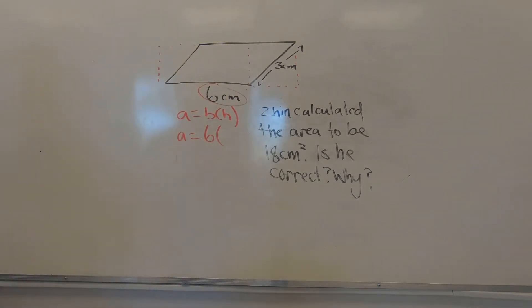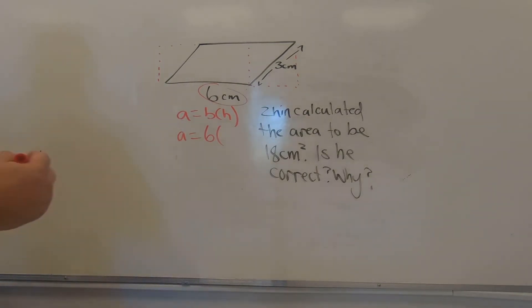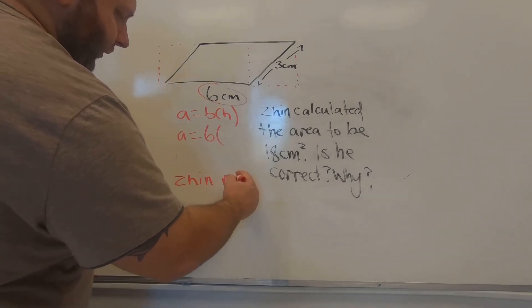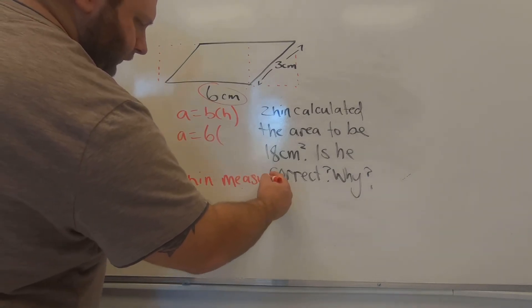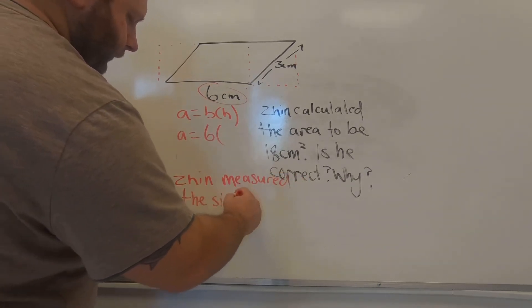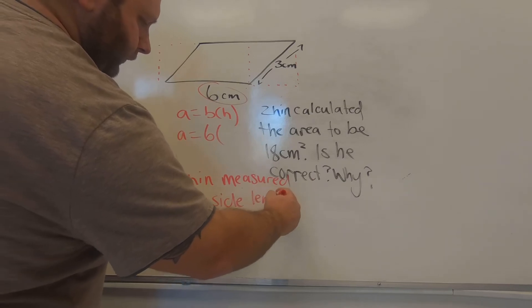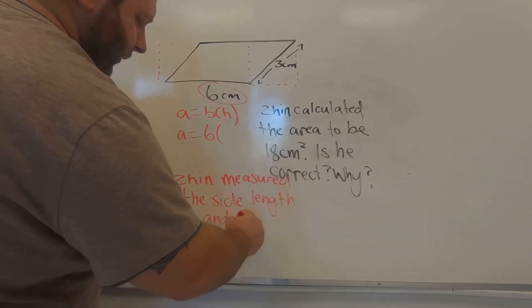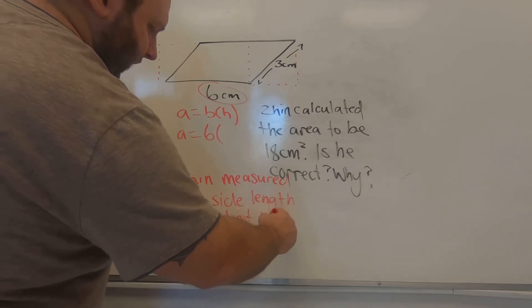So Shin is wrong. And the reason why he's wrong is because Shin measured the side length, not the height. So Shin measured the side length and not the height.